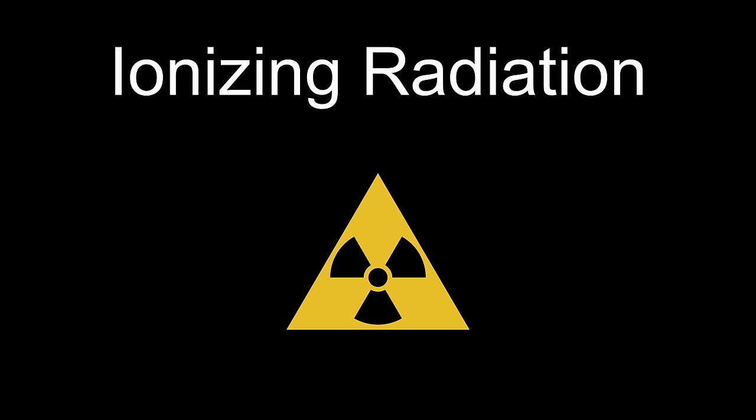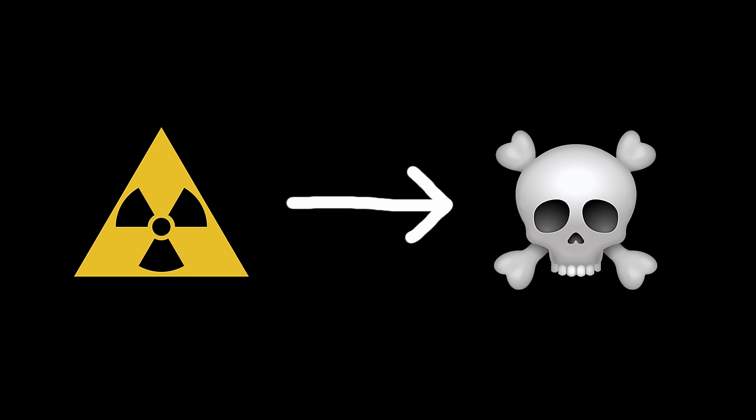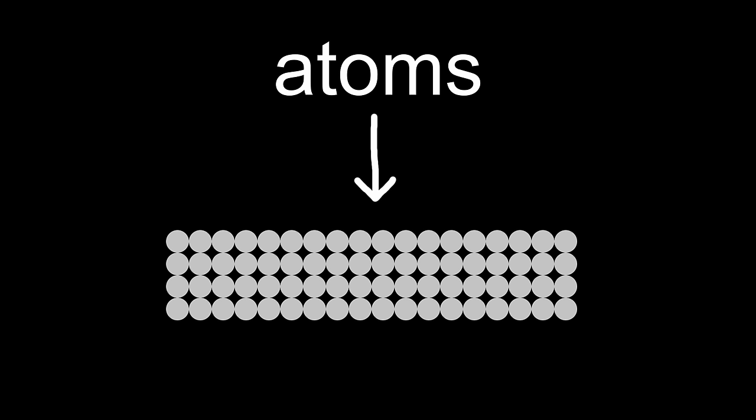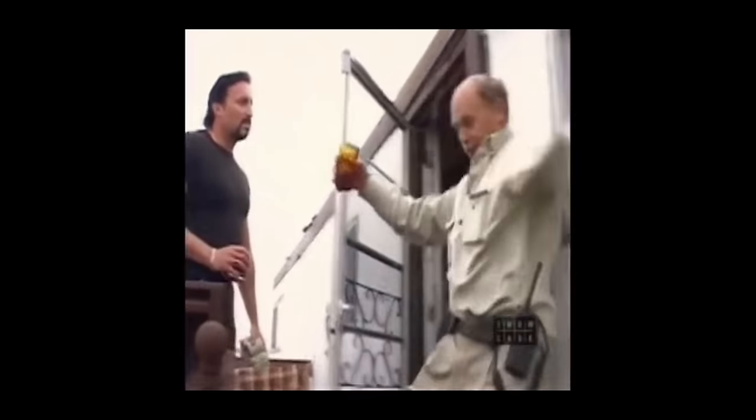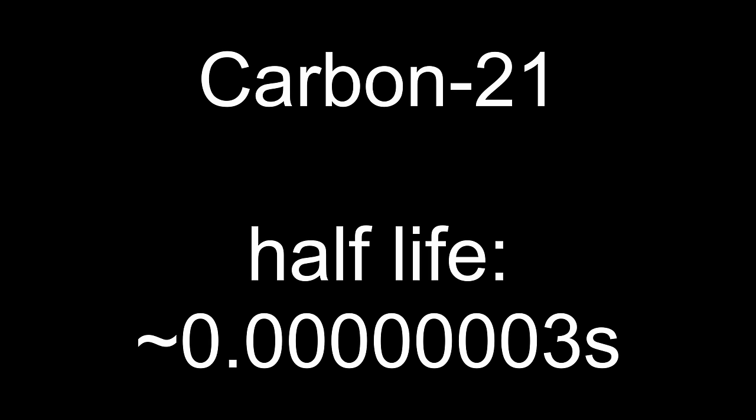That releases ionizing radiation. Not so fun fact, that stuff will kill you. If you have a large group of atoms, you can predict when half of those will have fallen apart. That's the half-life. Depending on how unstable an isotope is, it will survive a certain amount of time. Some don't want to live, some really don't want to live, but some will live far longer than you probably will.